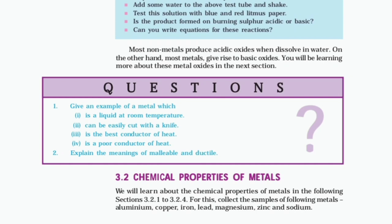Questions: Give an example of a metal which (1) is a liquid at room temperature, (2) can be easily cut with a knife, (3) is the best conductor of heat, (4) is a poor conductor of heat. Also, explain the meanings of malleable and ductile.